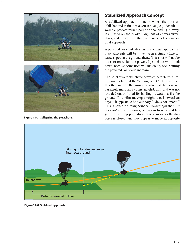Stabilized Approach: The concept of a stabilized approach is one in which the pilot establishes and maintains a constant angle glide path towards a predetermined point on the landing runway. It is based on the pilot's judgment of certain visual cues, and depends on the maintenance of a constant final approach. A powered parachute descending on final approach at a constant rate will be traveling in a straight line toward a spot on the ground. This spot will not be the touchdown point, because some float will inevitably occur during the powered roundout and flare. The point toward which the powered parachute is progressing is termed the aiming point (Figure 11-8) — the point on the ground at which, if the powered parachute maintained a constant glide path and was not rounded out or flared, it would strike the ground.